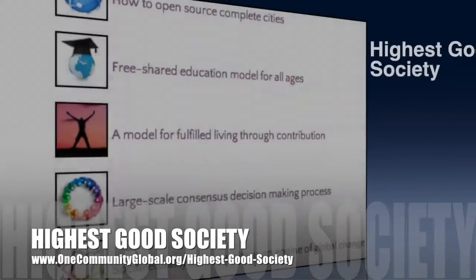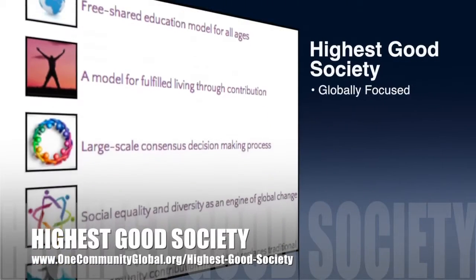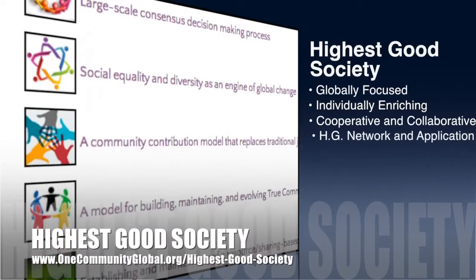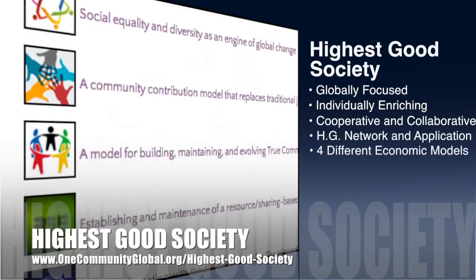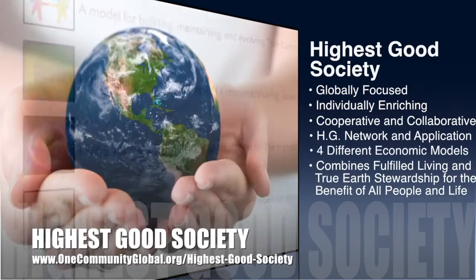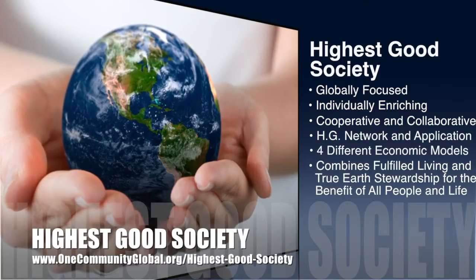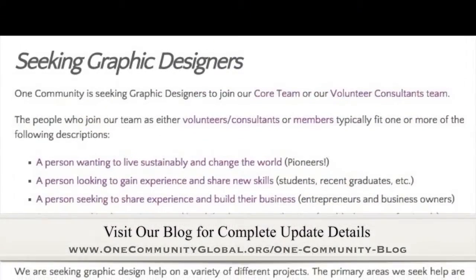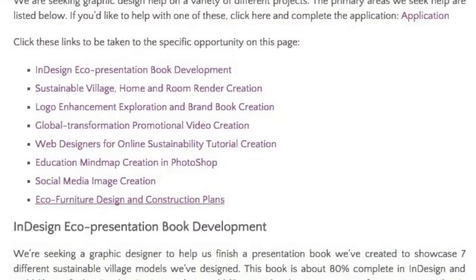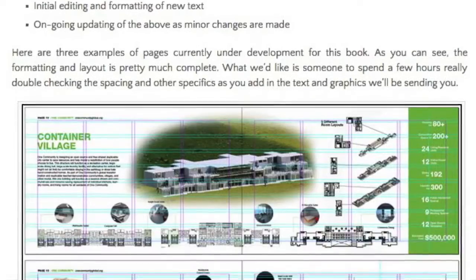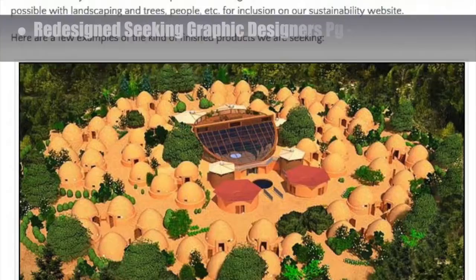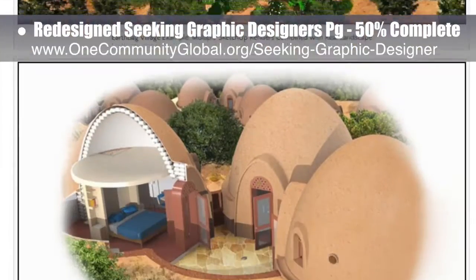The OneCommunity approach to Highest Good Society is globally focused, individually enriching, cooperative and collaborative, includes a Highest Good network and application, four different economic models, and combines fulfilled living and true earth stewardship for the benefit of all people and all life on this planet. This last week the core team began updating all our Help Wanted pages and our online marketing campaigns, with initial focus on web and graphic design help. We finished updating all our ads for graphic designers and 50% of redesigning the Seeking Graphic Designers page.